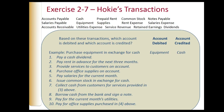Exercise 2-7 involves external transactions for Hokies Company. We have various accounts: accounts payable, salaries payable, accounts receivable, cash, equipment, utilities expense, prepaid rent, supplies, service revenue, common stock, rent expense, retained earnings, notes payable, salaries expense, and dividends. We'll use those accounts to identify which should be debited and credited for each transaction.